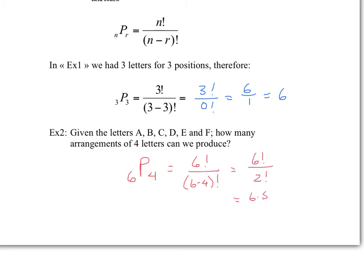If you look at the simplification of factorials, I could cancel the 2 factorial out. What we're left with is 6 times 5 times 4 times 3. That would be 30 times 12, which is 360.